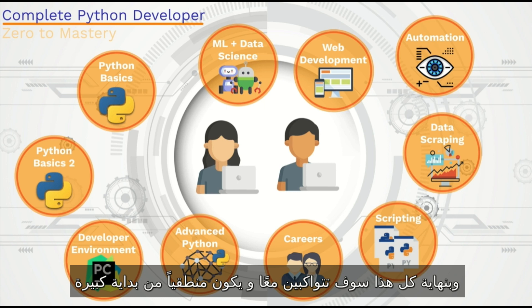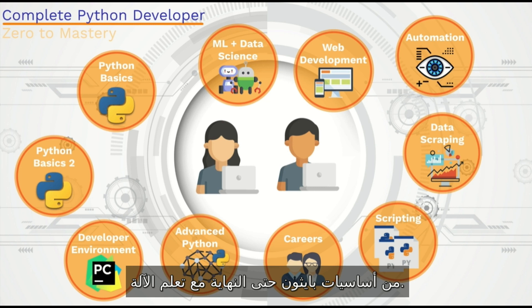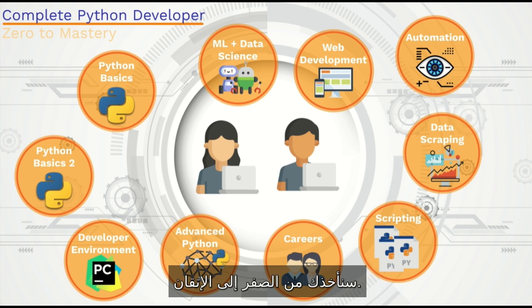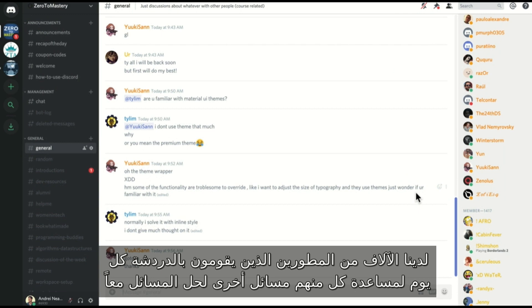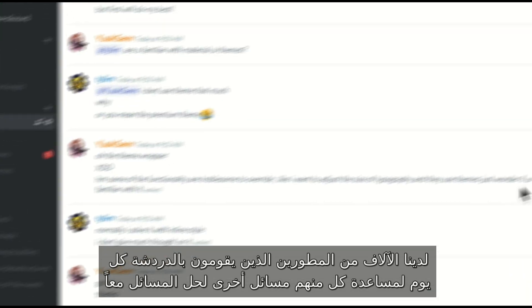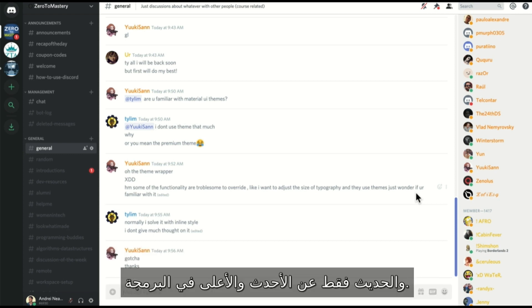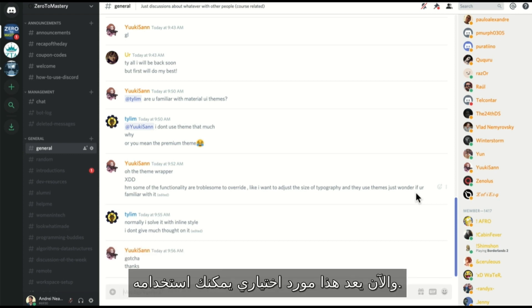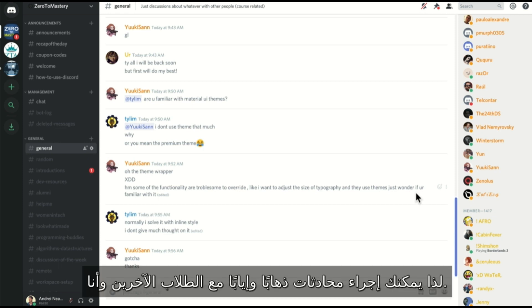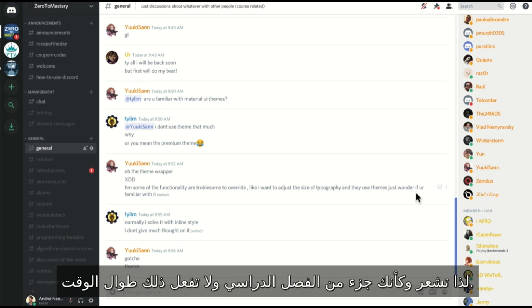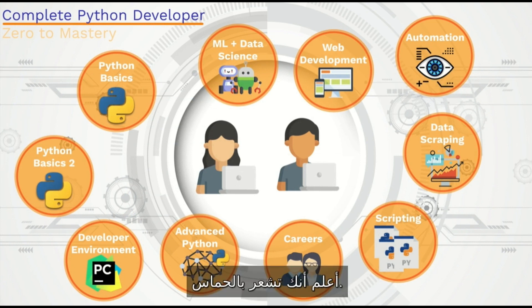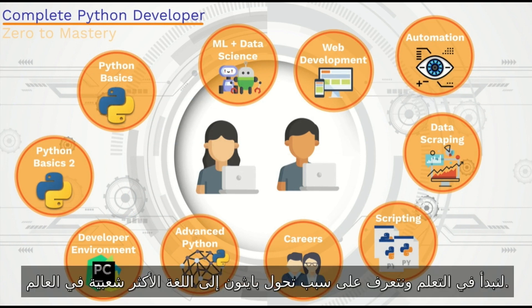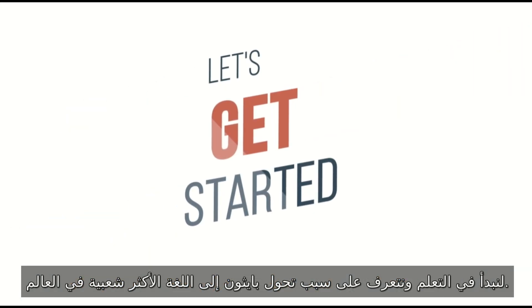As you can see, we have a ton to cover in this course, and by the end of it all, everything is going to fit together and make sense — from the very beginning of Python basics to the very end with machine learning. We're gonna take you from zero to mastery. The best part of this course is our online community: thousands of developers chatting every day, helping each other out, solving problems together. It's an optional resource so you feel like you're part of a classroom and not doing this all alone. So let's get started and see why Python has become the most popular language.